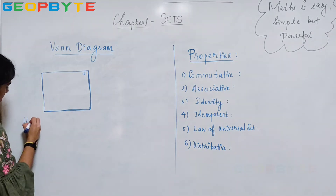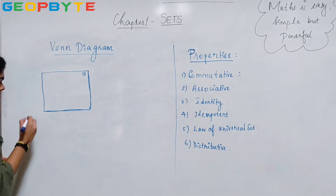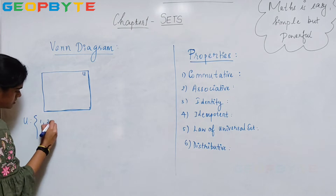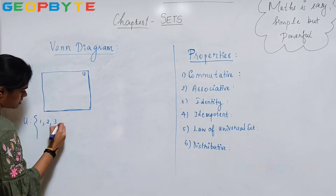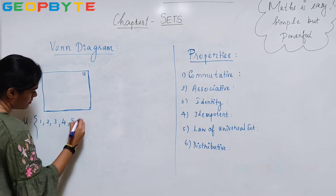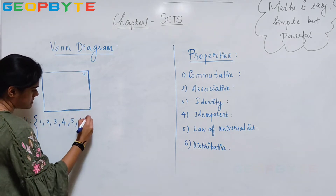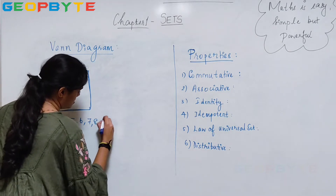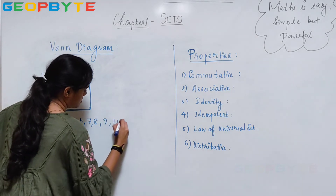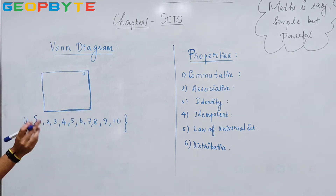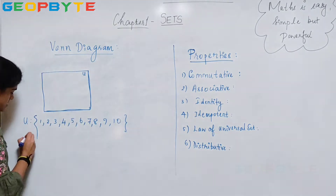For example, if I define my universal set as 1, 2, 3, 4, 5, 6, 7, 8, 9, 10. And what are the subsets?